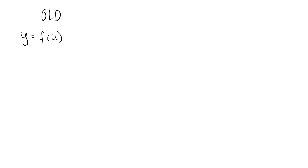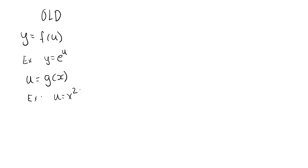In this case, I have a function y is a function of u. As an example, y could be equal to e to the u. u is itself a function of x; as an example, we could have u equal to x squared. I can take the composition of these two functions and write y as a function of u, where u is g of x. With this composition, y becomes a function of x. I have previously denoted this composition by h of x.